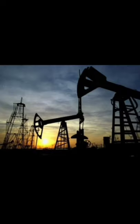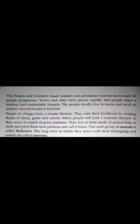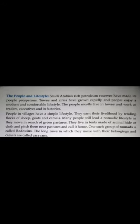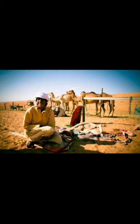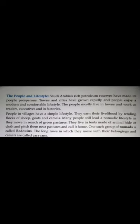Saudi Arabia's rich petroleum reserves have made its people prosperous. Towns and cities have grown rapidly and people enjoy a modern and comfortable lifestyle. People mostly live in towns and work as traders, executives, and in factories. People in villages have a simple lifestyle, earning their livelihood by tending flocks of sheep, goats, and camels. Many people still lead a nomadic lifestyle, moving in search of green pastures. They live in tents made of animal hide or cloth. One such group of nomads is called Bedouins, and the long rows in which they move with their belongings and camels are called caravans.